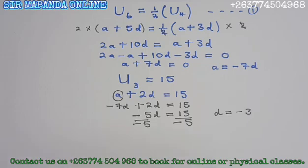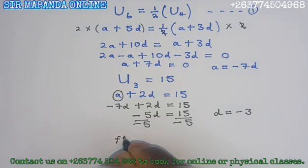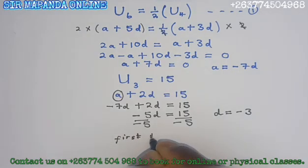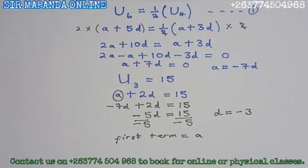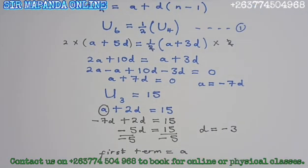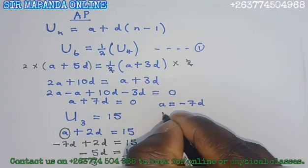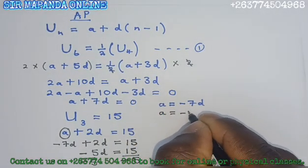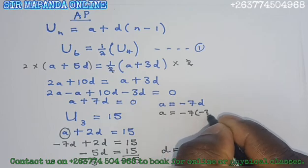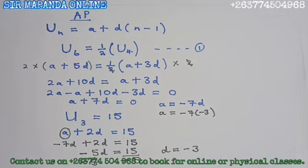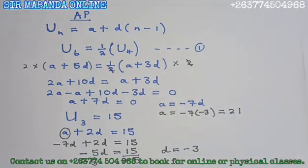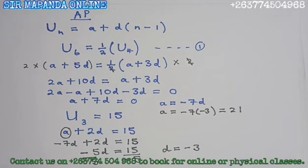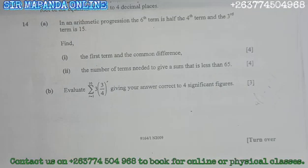To find the first term, remember that the first term is represented by the letter A. We already made A the subject in equation one: A equals minus 7D. So we put minus 3 on D: minus 7 times minus 3 gives 21. So the first term A is 21 and the common difference D is minus 3.